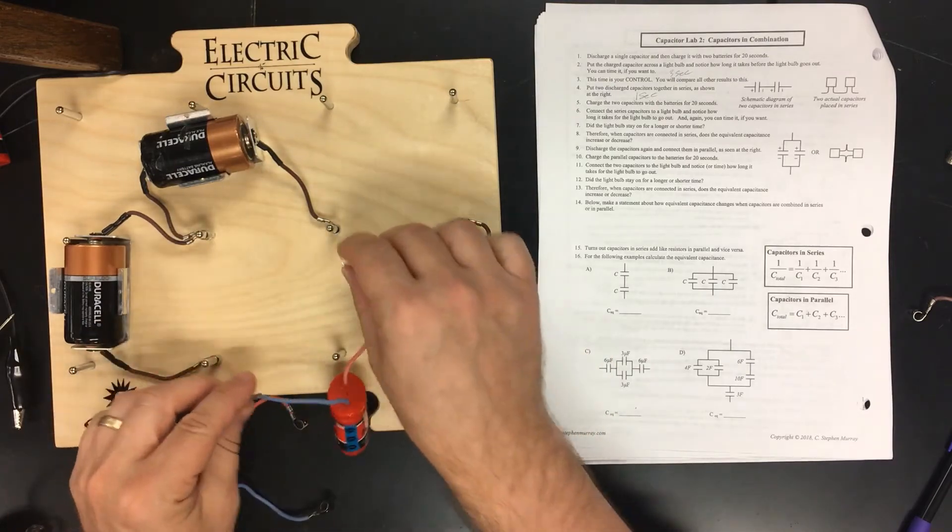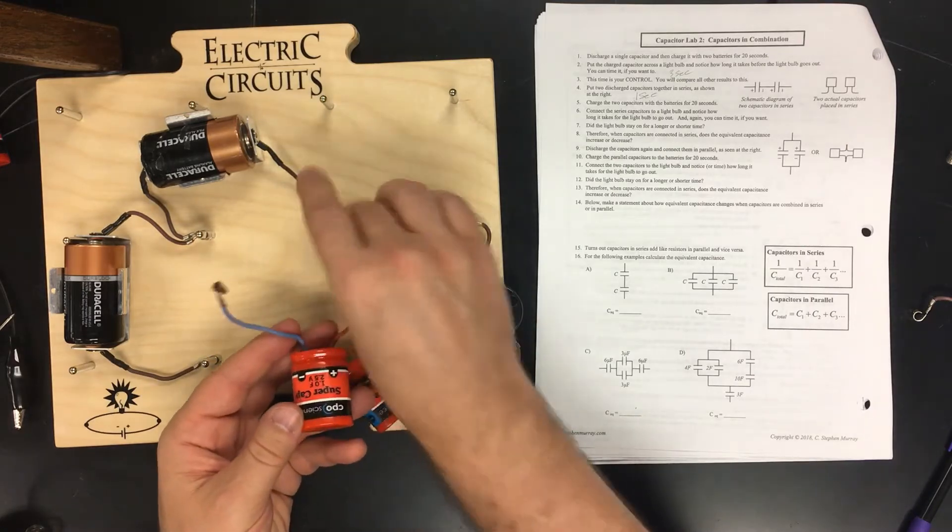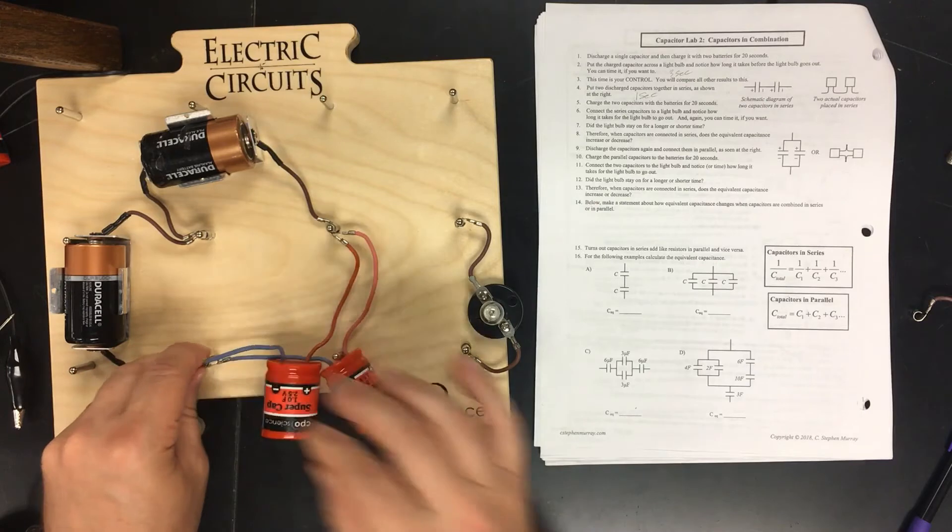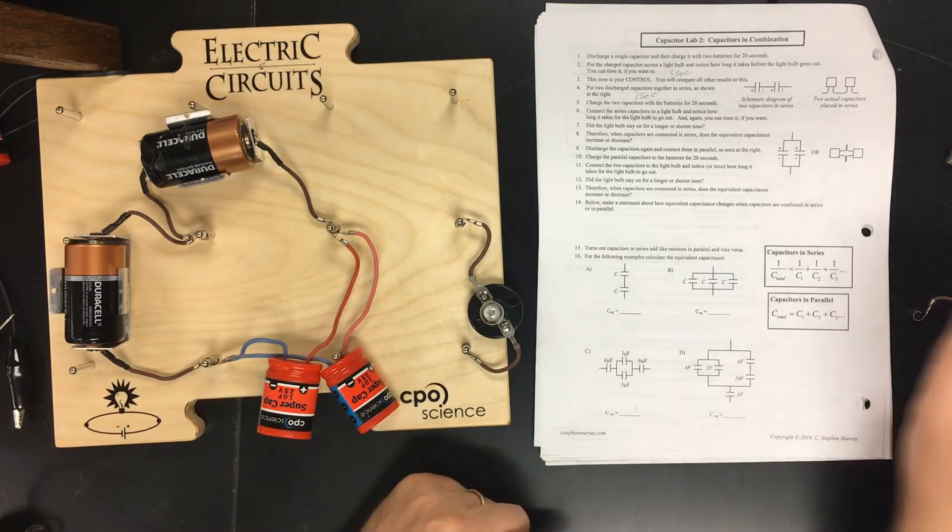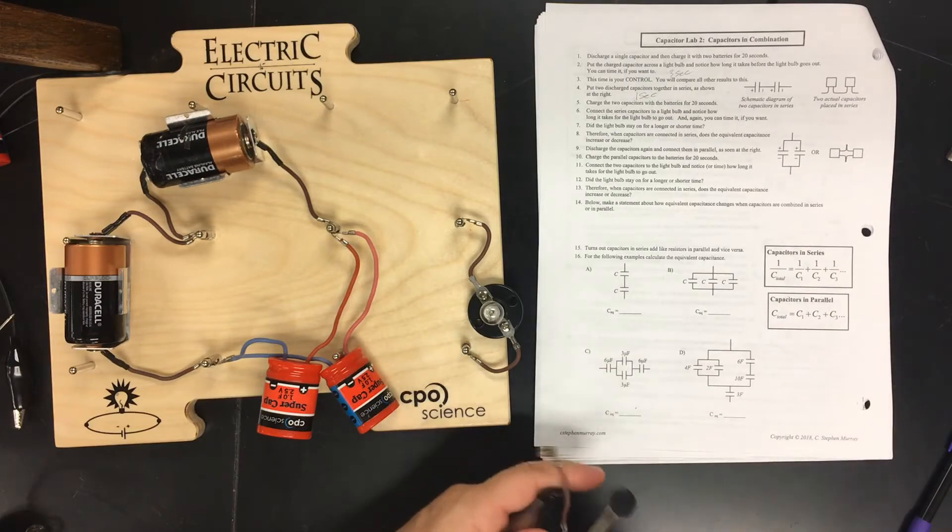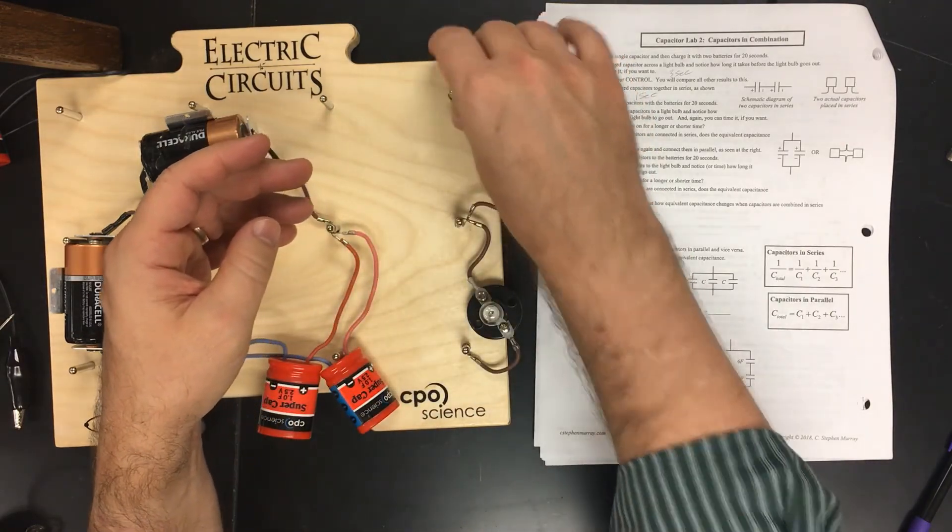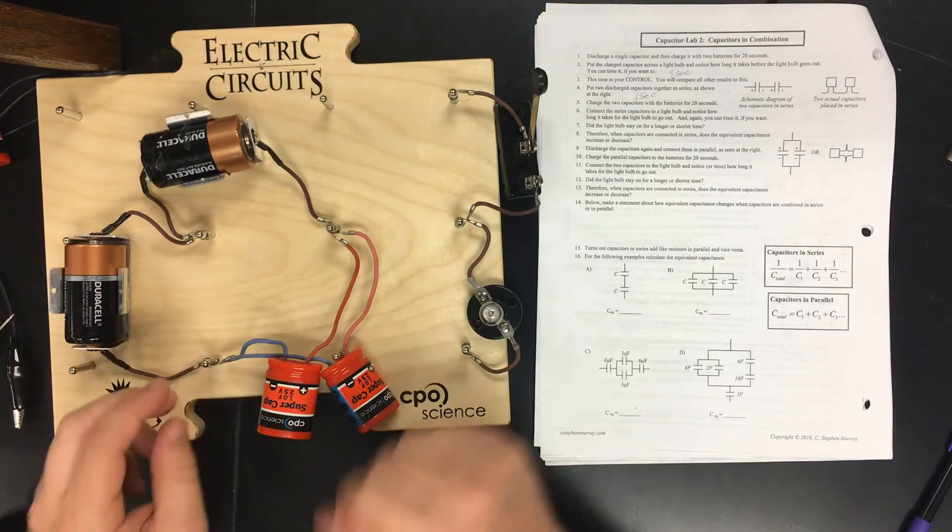So now let's do them in parallel. Positive, positive. Here we go. Counting: 1, 2, 3, 4, 5, 6, 7, 8, 9, 10, 11, 12, 13, 14, 15, 16, 17, 18, 19, 20.